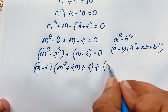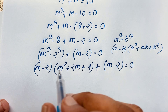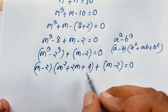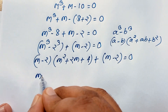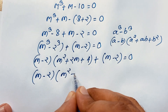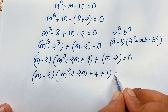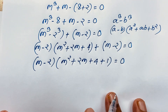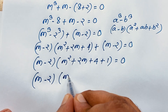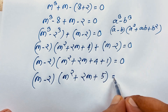Here, (m minus 2) appears in both terms, so it is a common factor. Factoring it out, we get (m minus 2)(m² + 2m + 4 + 1) equals 0, which simplifies to (m minus 2)(m² + 2m + 5) equals 0.